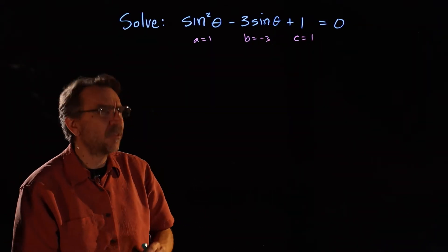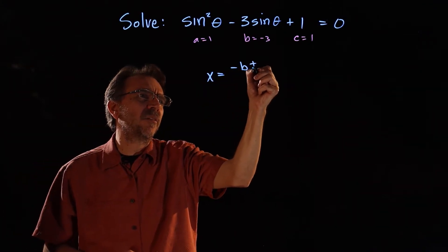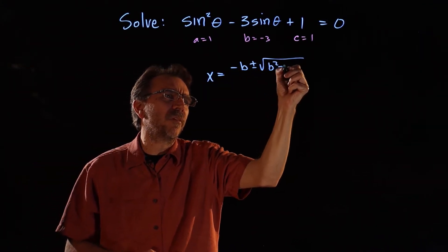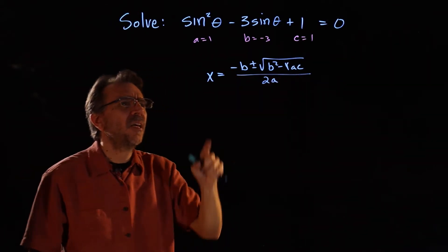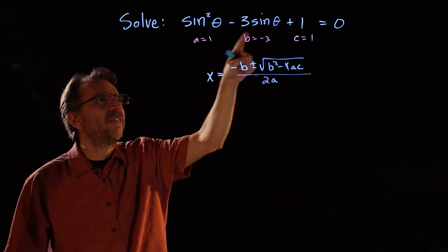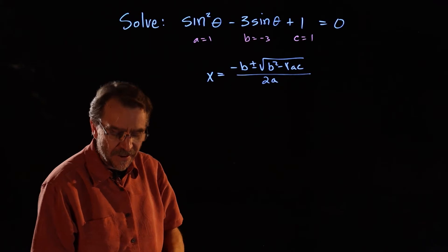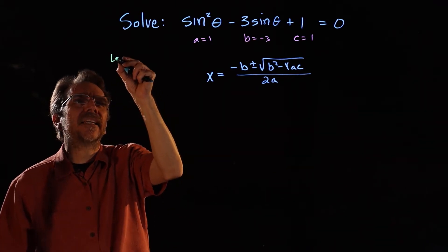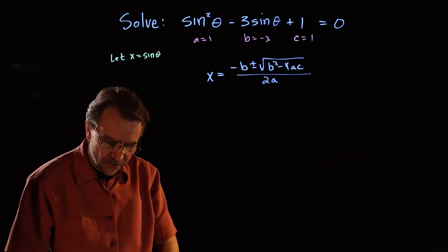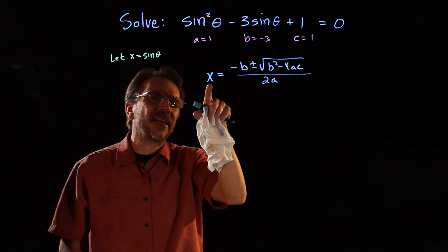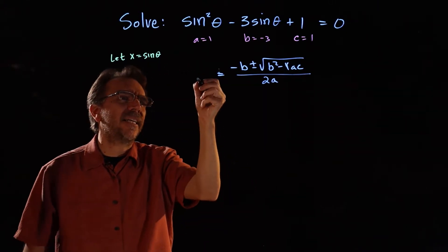Now remember, with the quadratic formula, we have x equals negative b plus or minus square root of b squared minus 4ac, all over 2a. But we don't have an x — our variable here is actually sine theta. So what we're going to do is let x equal sine theta. When we run the quadratic formula, we're not going to get x, we're going to get answers for the variable sine theta.